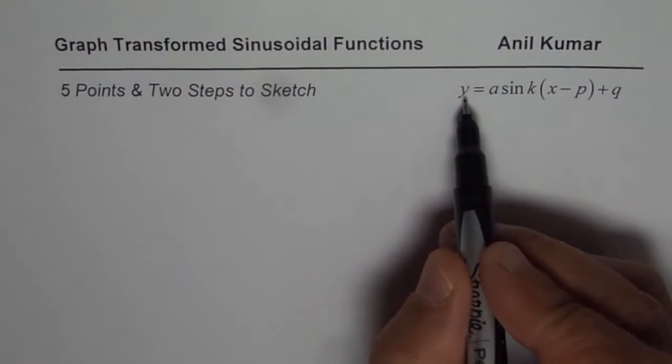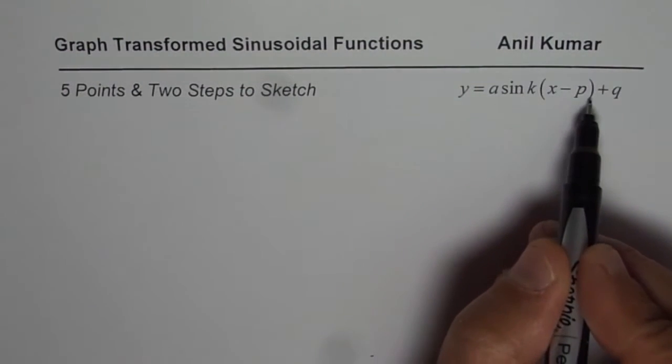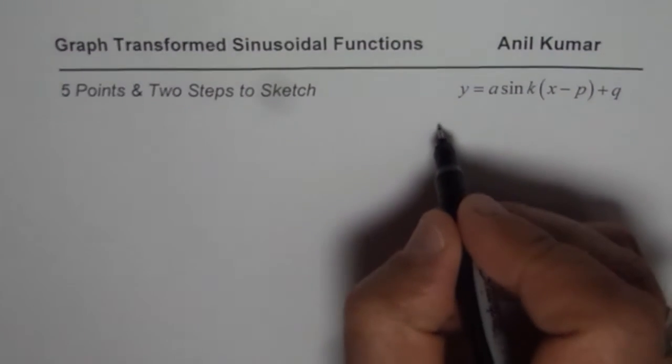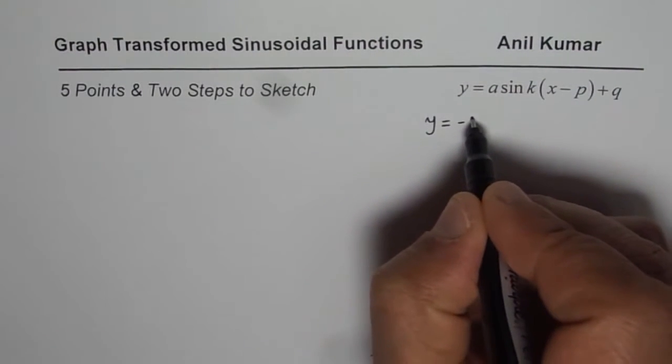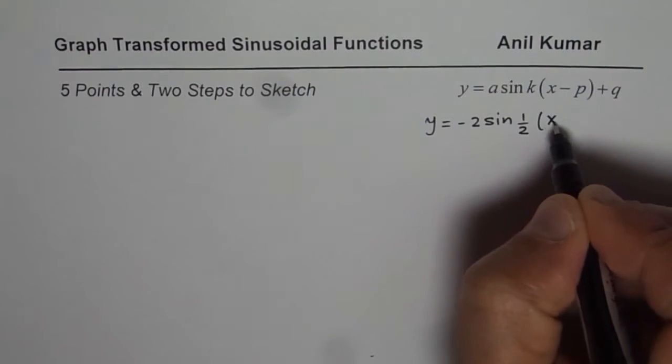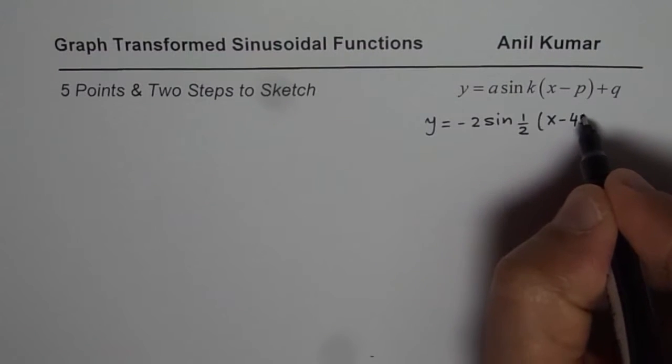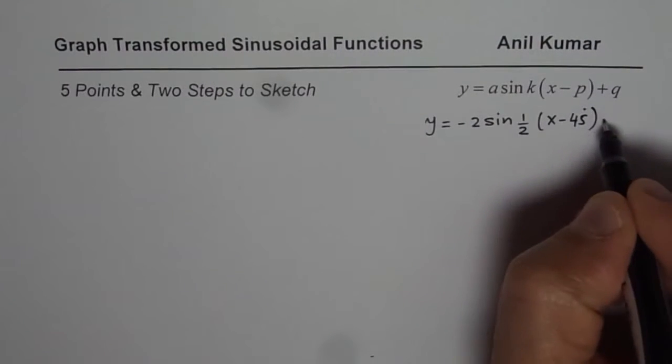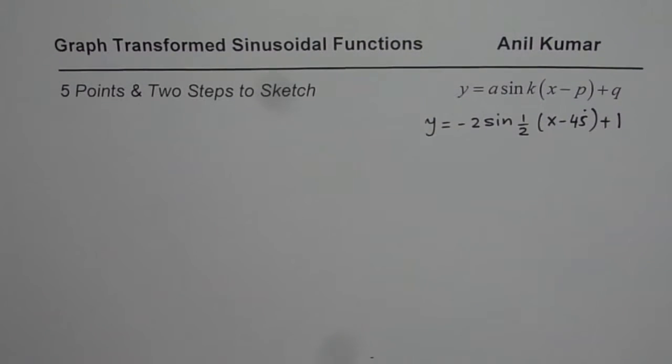We have the general equation y = a sin k(x - p) + q. Let the equation be a particular graph, y = -2 sin of half times x minus 45 degrees plus 1. So let that be the equation to be sketched.